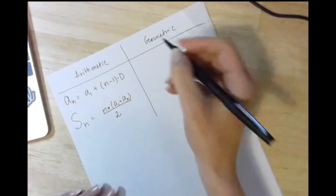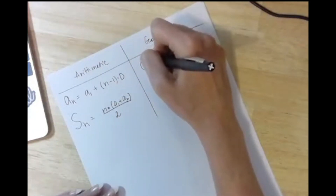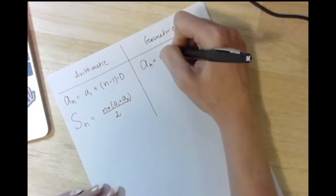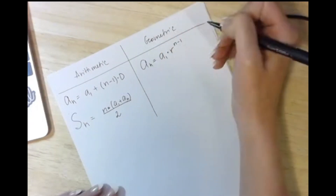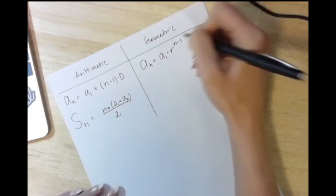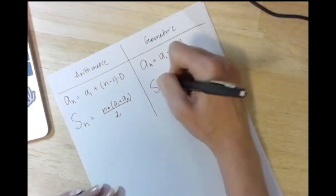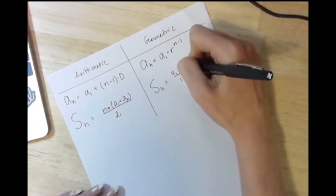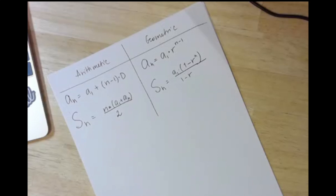For geometric sequences, the nth term is: a_n = a_1 × r^(n−1), where r is the common ratio. The geometric sum formula is: S_n = a_1 × (1 − r^n) / (1 − r). I know this may be complicated, but we will create a mnemonic device to help you remember all of it.